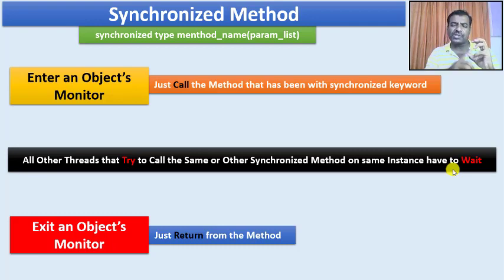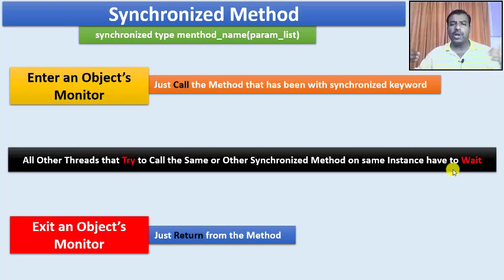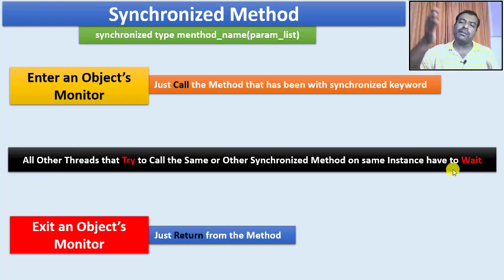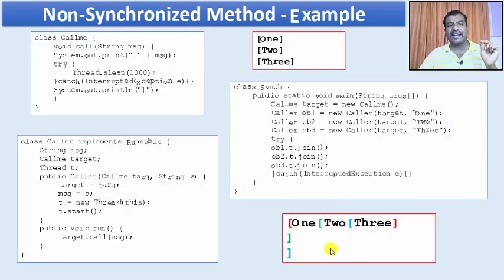If thread one accesses object one and thread two accesses a different object two, there is no need for synchronization. The object must be the same shared resource. Any thread trying to call the same synchronized method on the same instance must wait until the current thread exits the monitor. This is how synchronized methods work.